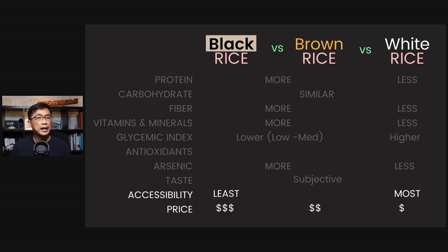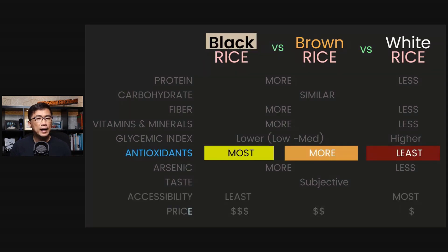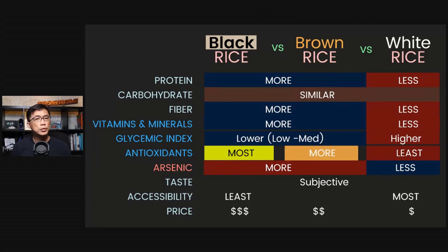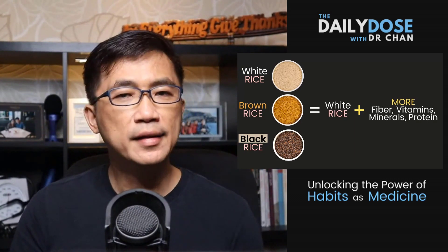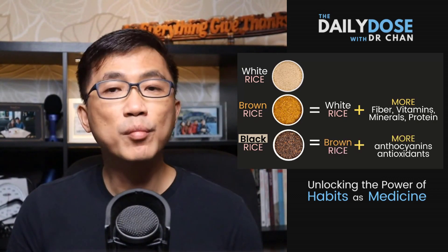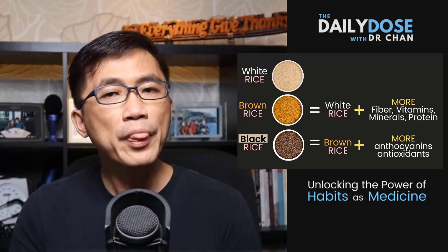So why do people pay so much more for black rice? What is so special about it? Other than its unique taste, which I personally like a lot, black rice stands out because of its high level of antioxidants. Black rice is very rich in anthocyanins — the phytochemicals found in deep, dark-colored fruits and vegetables — known for their strong antioxidant and other health-promoting properties. Simply put: brown rice is white rice plus more fiber, vitamins, minerals, and protein. And black rice is brown rice plus even more anthocyanins and antioxidants.